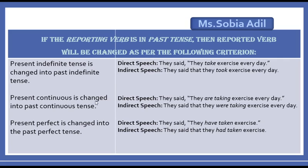Present perfect tense is changed into past perfect tense. For example: 'They said they have taken exercise.' — 'Have' changes to 'had,' making it: 'They said that they had taken exercise.' Present perfect continuous tense is changed into past perfect continuous tense. For example: 'They said they have been taking exercise since morning.' — becomes: 'They said that they had been taking exercise since morning.'